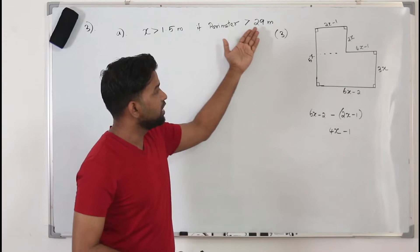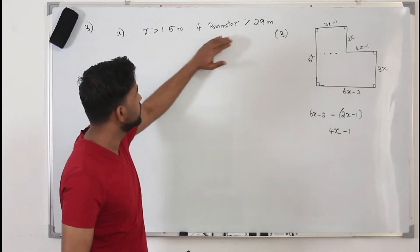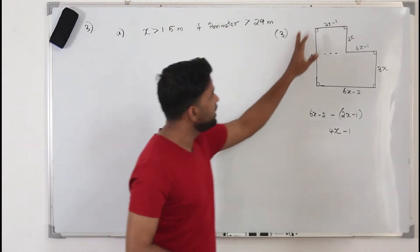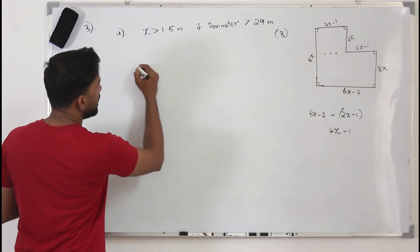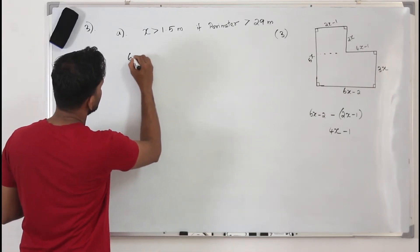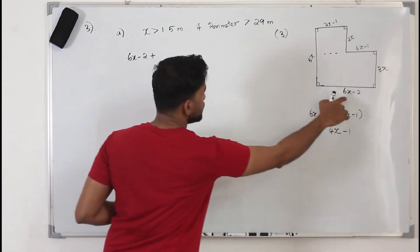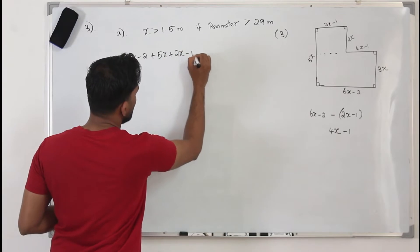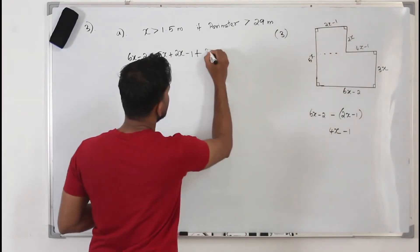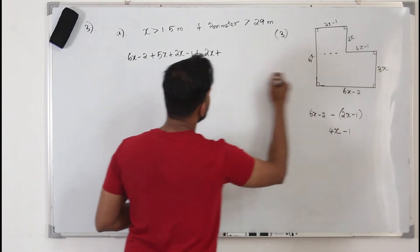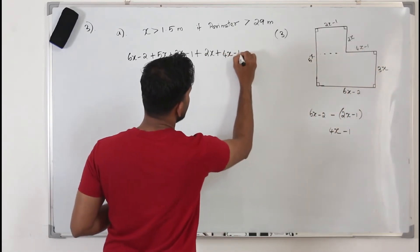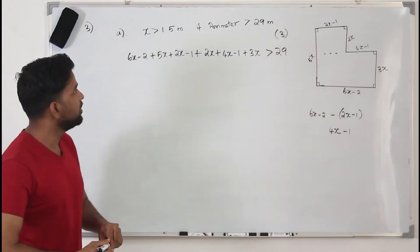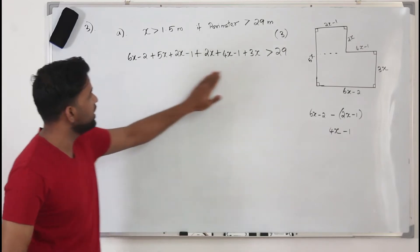Now the condition given is that the perimeter is greater than 29 meters. So we add all the boundary lines: 6x minus 2, plus 6x minus 2, plus 5x, plus 5x, plus 2x minus 1, plus 2x, plus 4x minus 1, plus 3x — all greater than 29 meters.